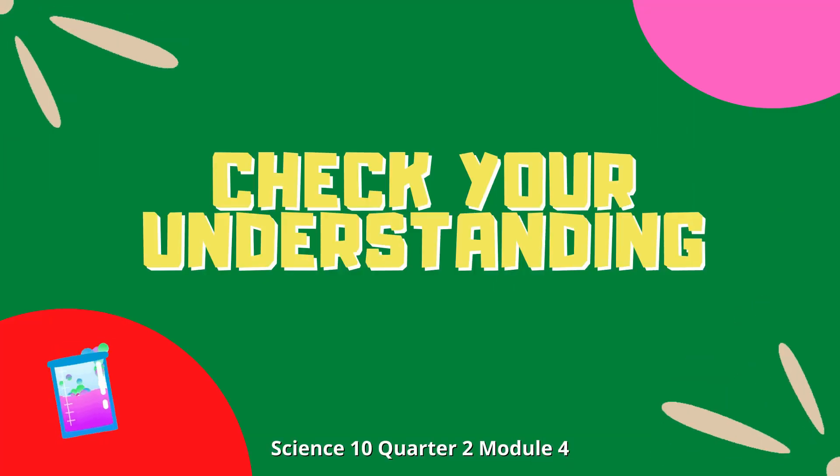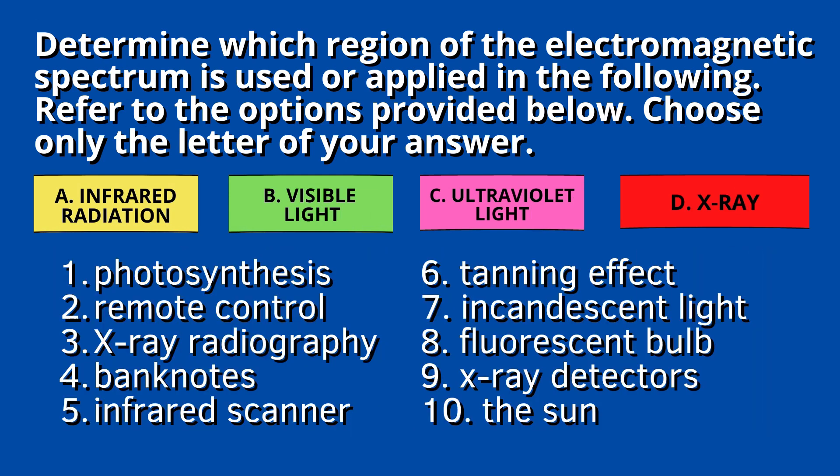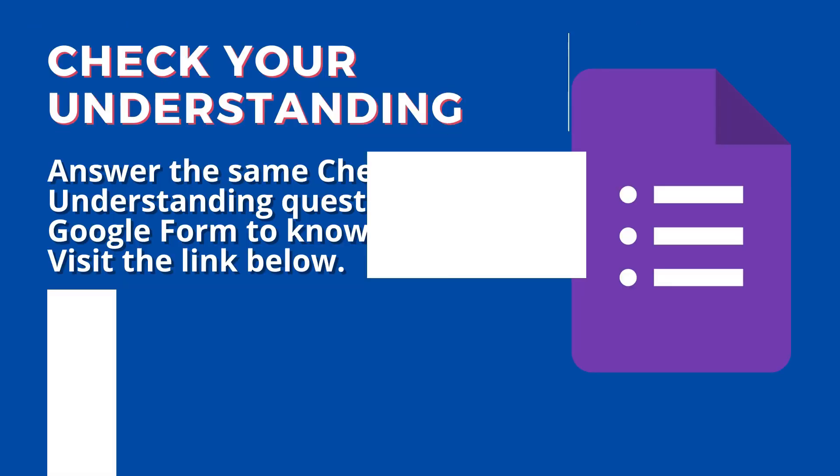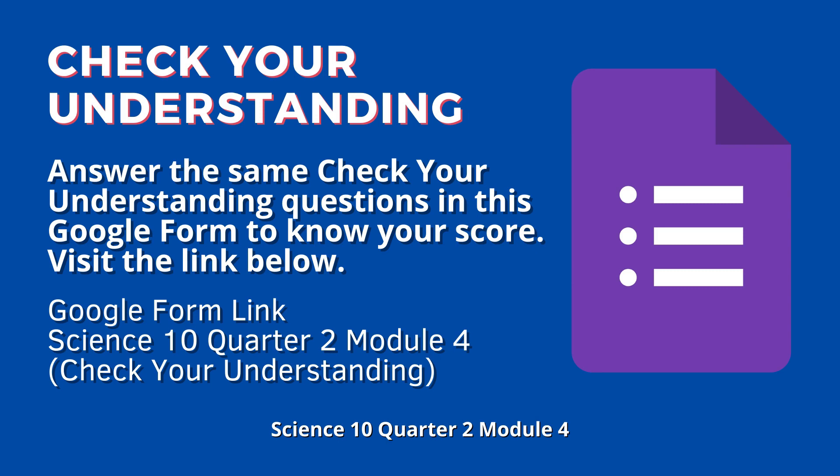Check your understanding: Determine which region of the electromagnetic spectrum is used or applied in the following. Choose only the letter of your answer. A. Infrared radiation. B. Visible light. C. Ultraviolet light. D. X-ray. 1. Photosynthesis. 2. Remote control. 3. X-ray radiography. 4. Banknotes. 5. Infrared scanner. 6. Tanning effect. 7. Incandescent light. 8. Fluorescent bulb. 9. X-ray detectors. 10. The sun. Answer the same questions in this Google form. Visit the link below found on the description area of this video module.